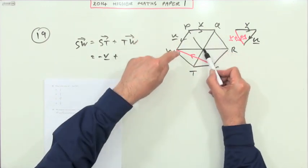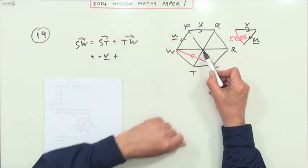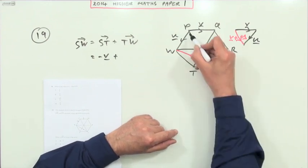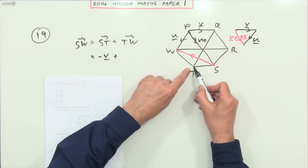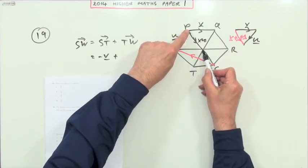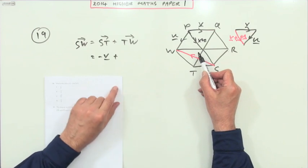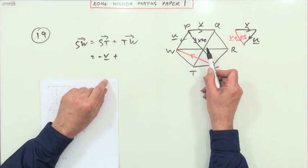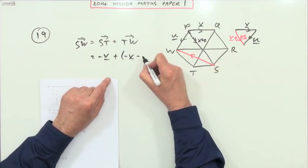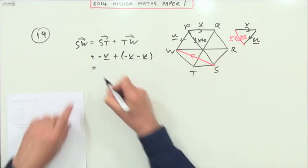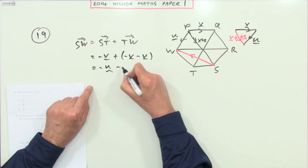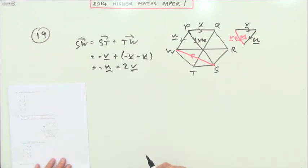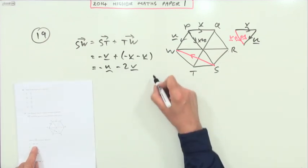V plus u gives you this line here. But notice it faces down the way—this line is v plus u, so this line TW is parallel to it but goes the opposite way, so it must be negative v and negative u. So all together I've got one lot of negative u minus two lots of v, which is A.